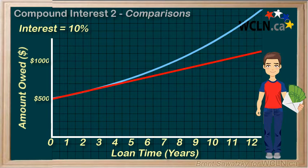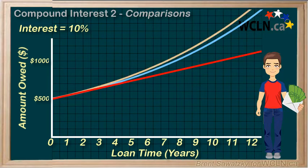Linda was definitely smart to ask for compound interest. That is, if the loan ended up being a long-term loan, then the compound interest method is far more fair to her. What if we did compound interest, but we compounded monthly? See how it grows faster than when we compound yearly? Again, the difference becomes a little more dramatic as time grows.